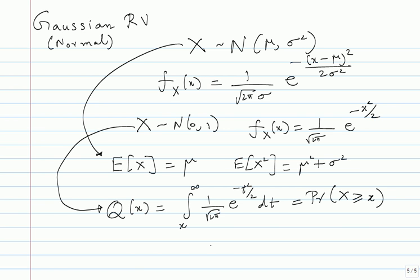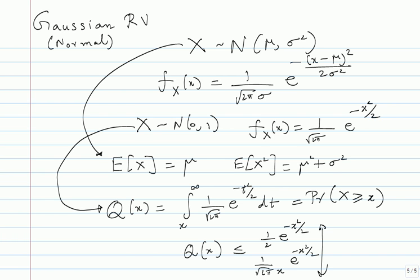The Q function falls very rapidly. A good upper bound for all cases is (1/2) e power minus x squared over 2. There is also an approximation valid for slightly larger values. These are good approximations for Q itself — in cases where you have to evaluate an integral involving Q and want a quick answer, you can plug in these approximations and get very nice results. There is also a closely related lower bound.